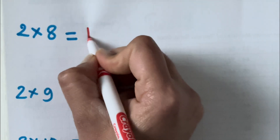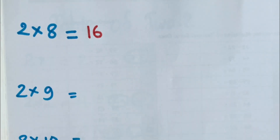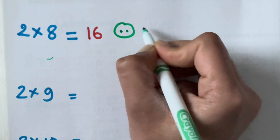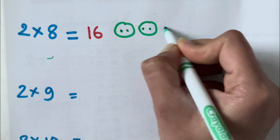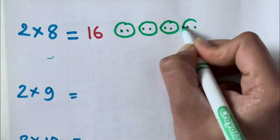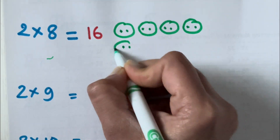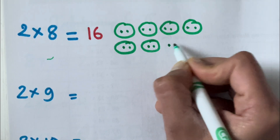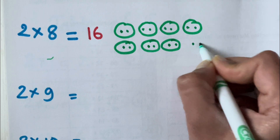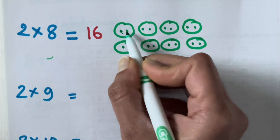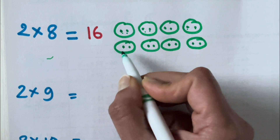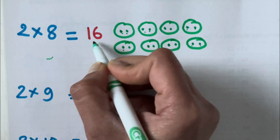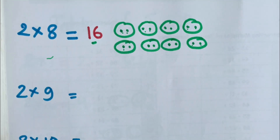8 times 2 is 16. That is 8 groups of 2. 1 group, 2 group, 3 groups, 4 groups, 5 groups, 6 groups, 7 and 8 groups. 1, 2, 3, 4, 5, 6, 7, 8, 9, 10, 11, 12, 13, 14, 15 and 16. 2 times 8 is 16.